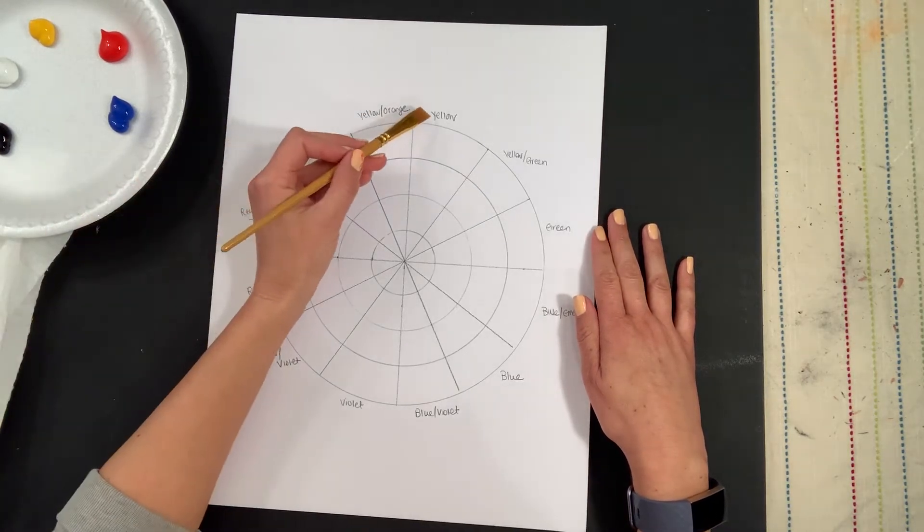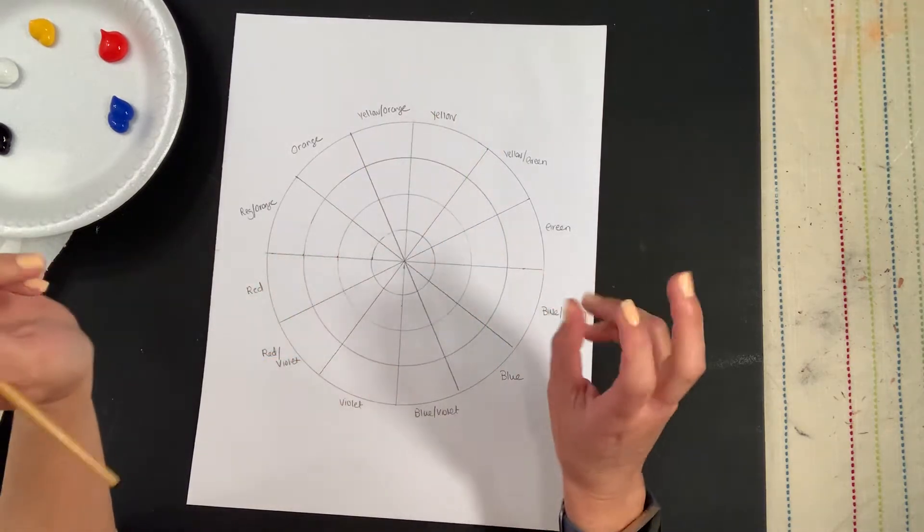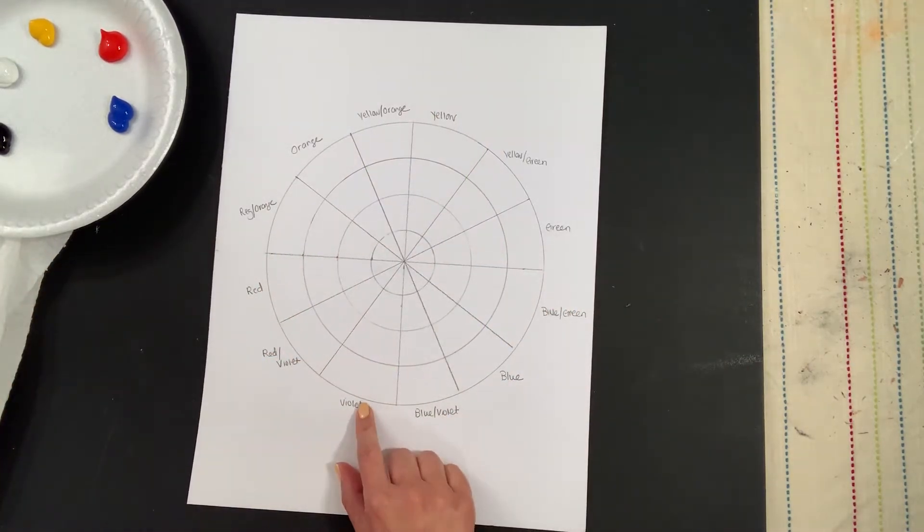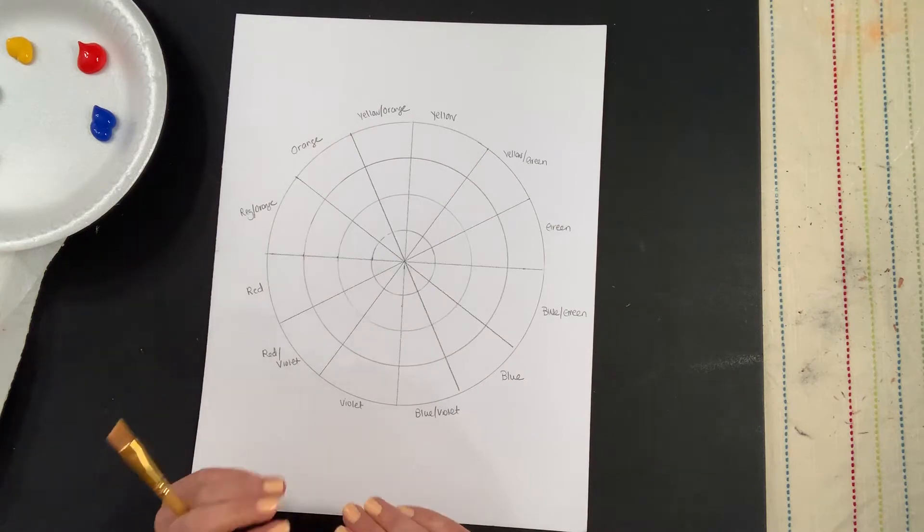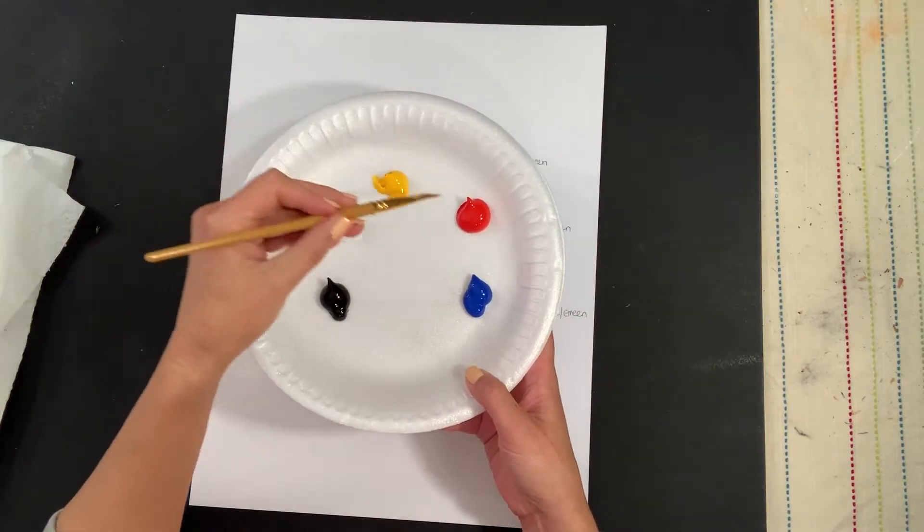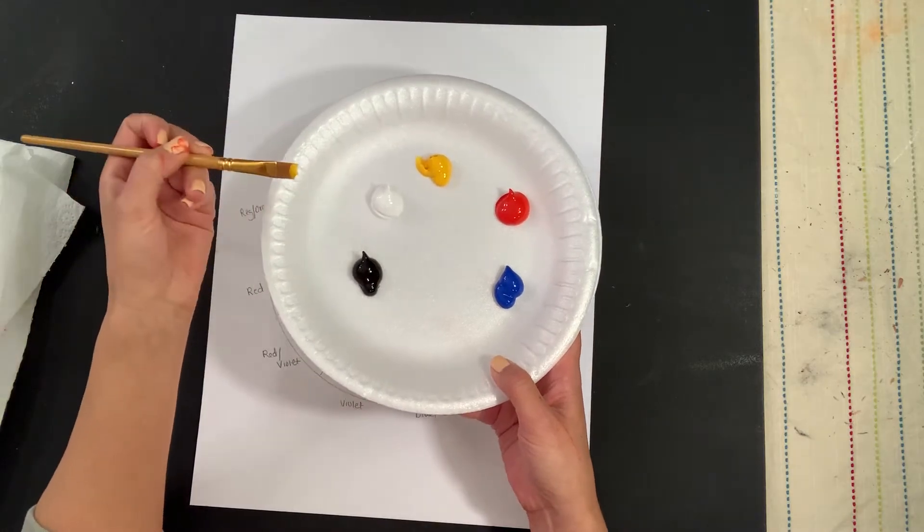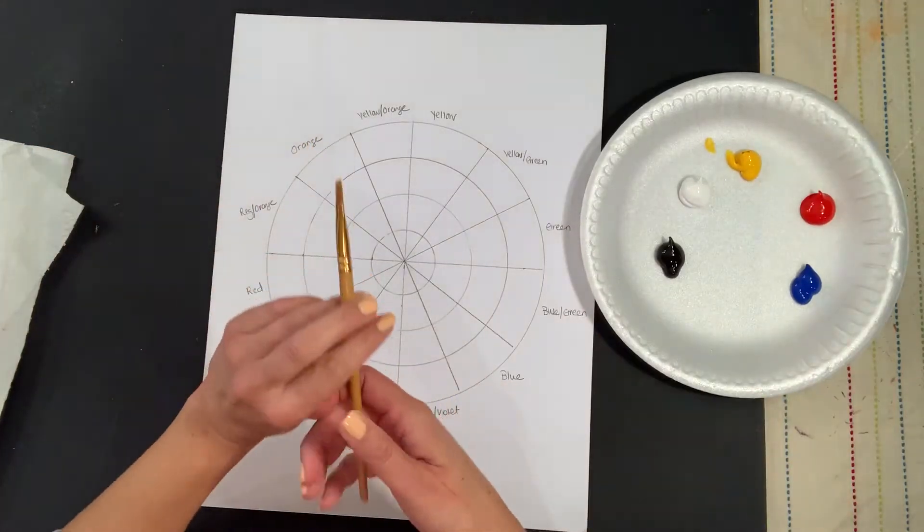I'm going to start first with yellow. Yellow typically is on the top of the color wheel like 12 o'clock, and then violet is at the bottom because it's the darkest color. On the very outside, hue is going to just be the original color. So I'm going to go ahead and take my paint. I already have my primary colors and my black and white. You don't need a lot in this.